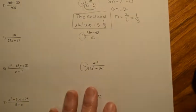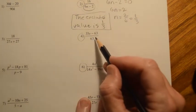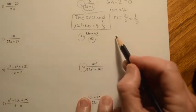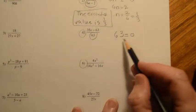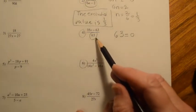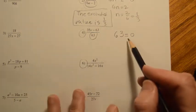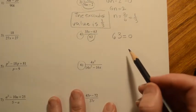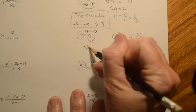For problem number four, as soon as I see a fraction, I want to know: is there anything I'm not allowed to plug in because it's going to make the denominator equal to zero? I would set the denominator equal to zero. Hopefully you realize how silly that is — 63 is never going to be equal to zero, because there's no variable down here. If we have a constant in the denominator, that's not going to produce any excluded values. So this just doesn't make sense and we would say no excluded values.